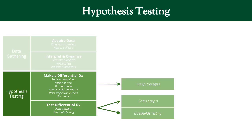You can see here we have two steps. We had our data gathering, which we talked about in the previous videos. And here we're going to talk about hypotheses testing, which comes in two pieces: the making of a differential diagnosis, and then in the next video, testing your differential diagnosis. We're going to revisit illness scripts and talk about threshold testing.